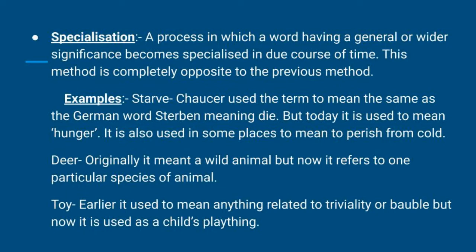Now we come to specialization — a process in which a word having a general or wider significance becomes specialized over time. This method is completely opposite to generalization. For example, the word 'starve': Geoffrey Chaucer used the term to mean the same as the German word 'sterben,' meaning to die, but today it is used to mean hunger, and in some places to mean perish from cold.